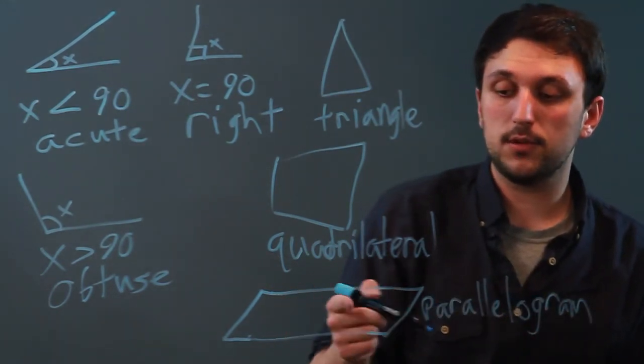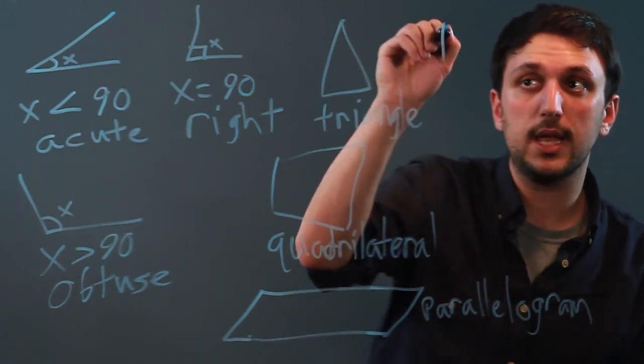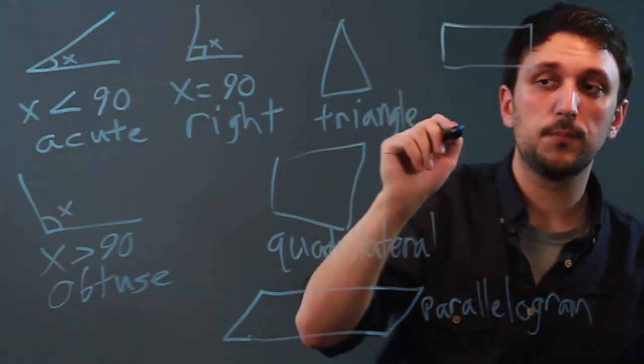Now, if these four sides and two parallel lines are all right angles, like this, you have a rectangle.